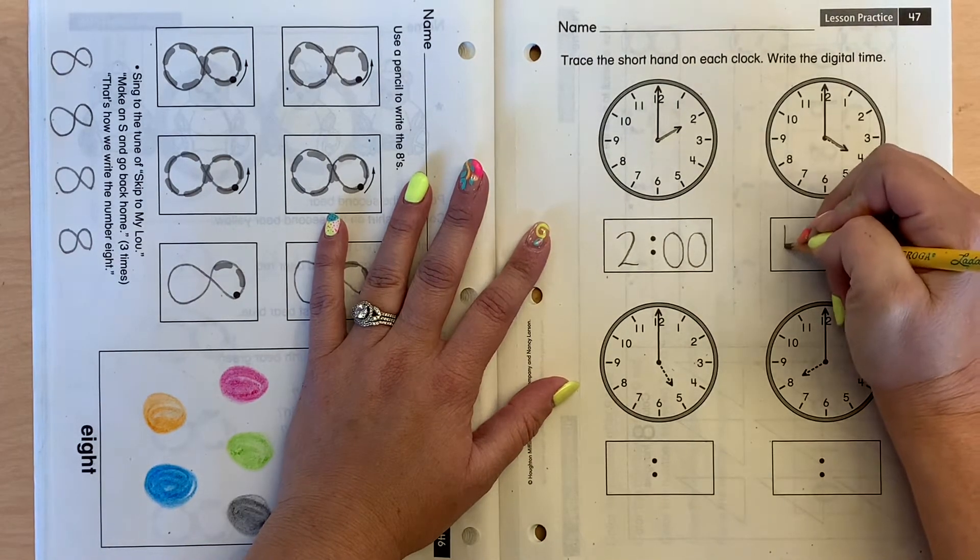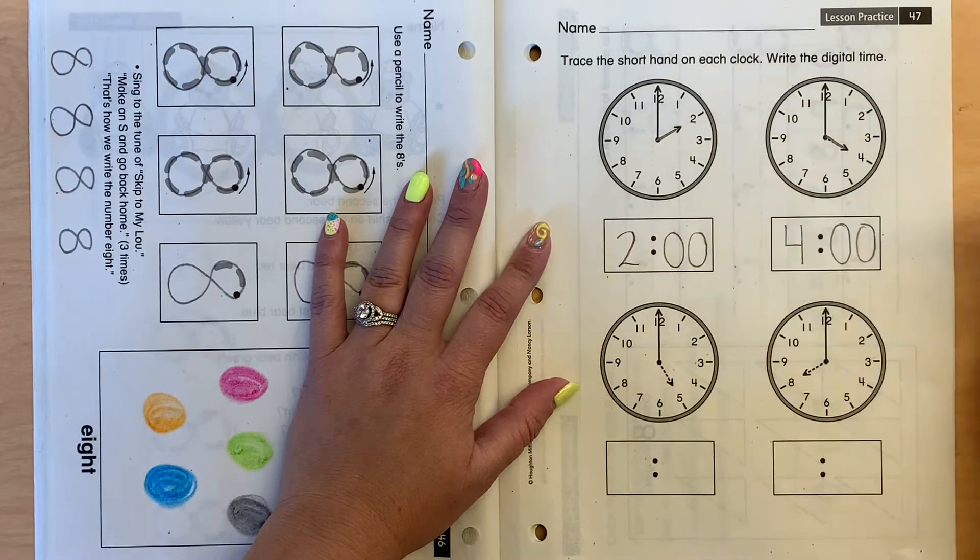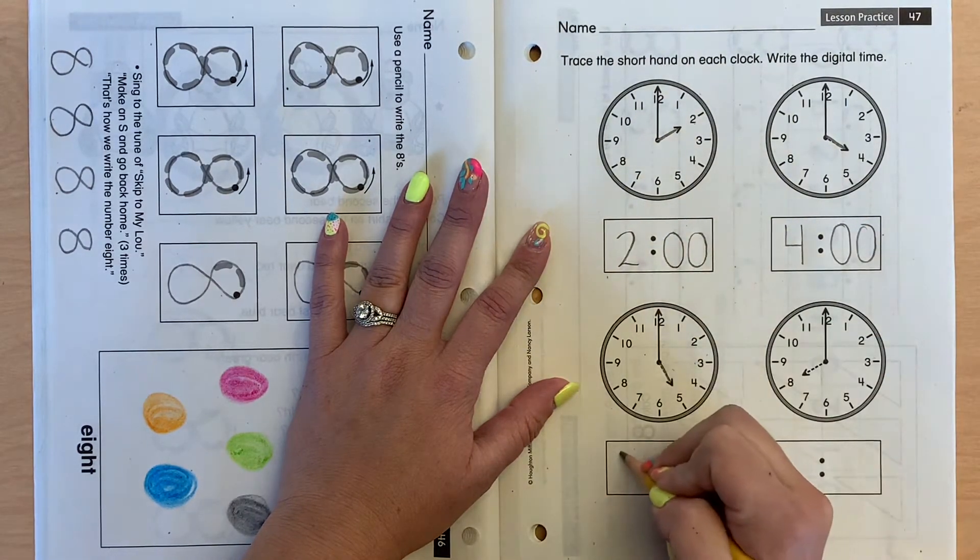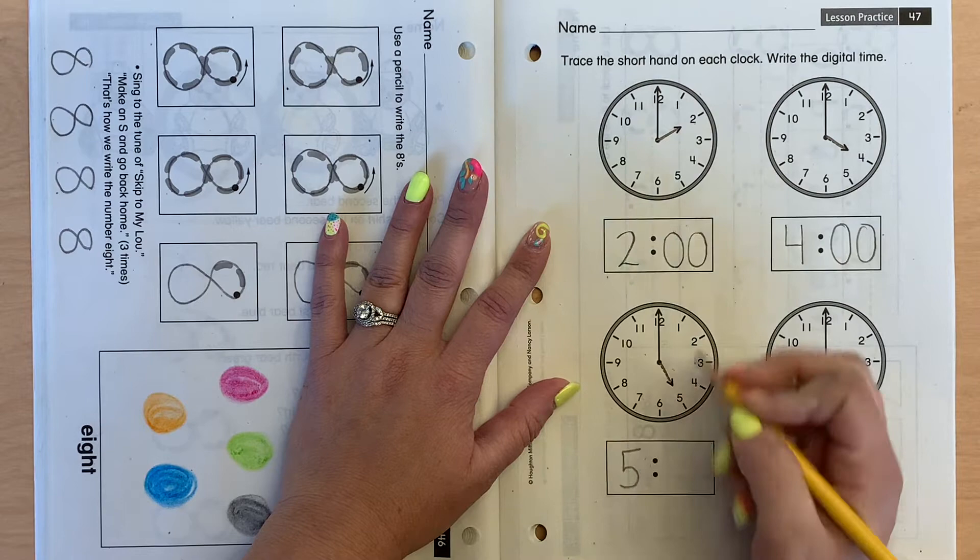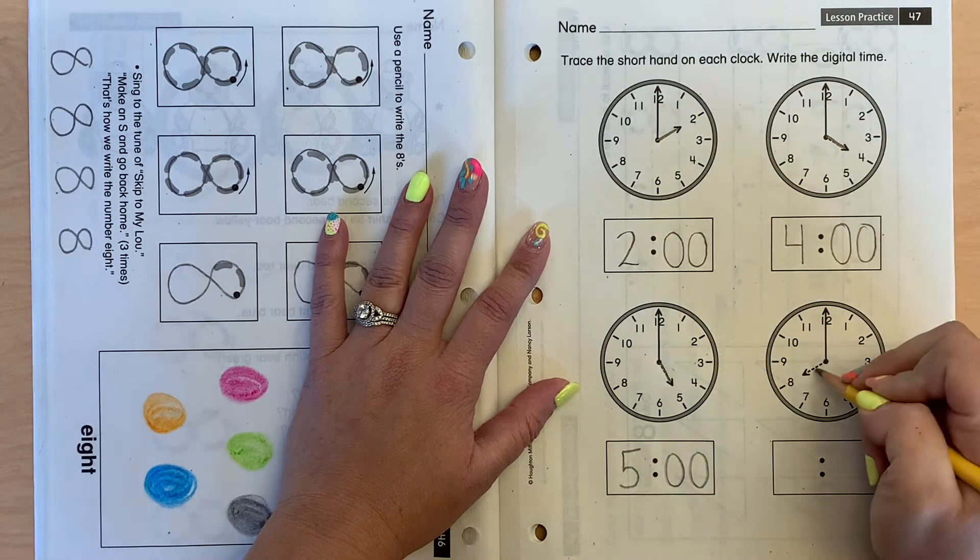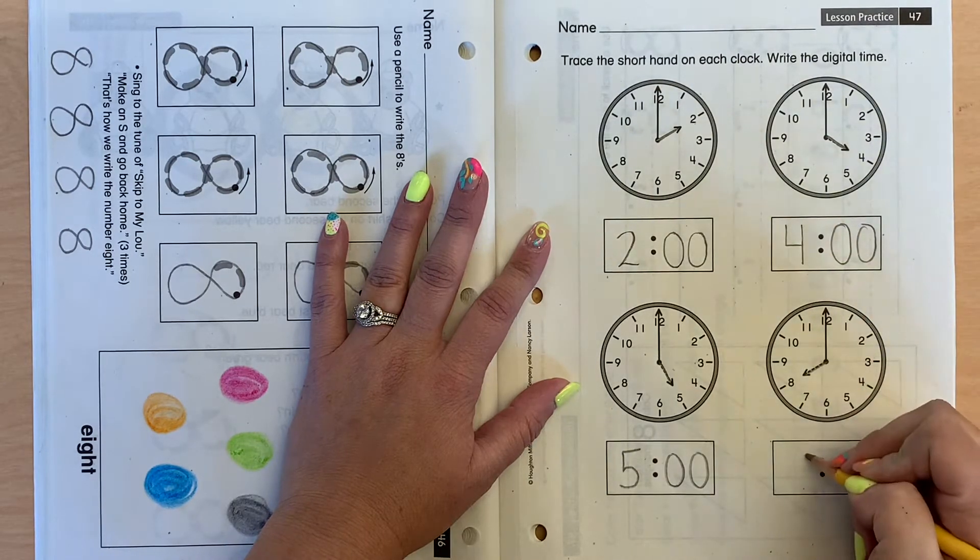So I'm going to draw my 4, and then I'm going to draw my o'clock, 0, 0. The next one, it's pointing at the 5, so this is telling me it is 5 o'clock. And last one is pointing at the 8, so this is telling me it's 8 o'clock.